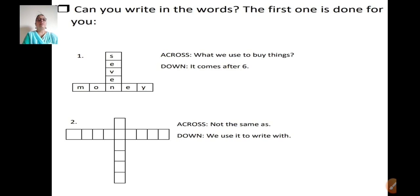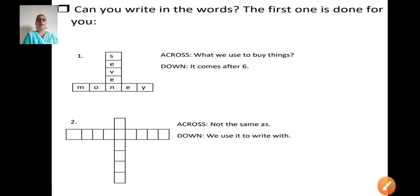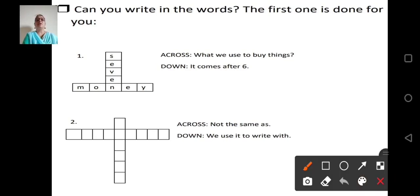On your screen you can see children, the question is given: can you write in the words, the first one is done for you. While solving the crossword puzzles, across and down clues are given. With the help of that clues, we have to think about the exact answer and see whether it is fitting on the blanks. Let us see the first solved crossword puzzle. Across is given what we use to buy things.